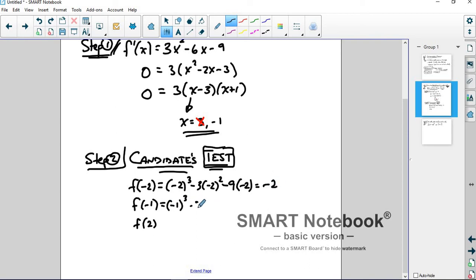Plug in -1: (-1)³ - 3(-1)² - 9(-1), that's 5. And then 2³ - 3(2)² - 9(2), if we calculate that out...